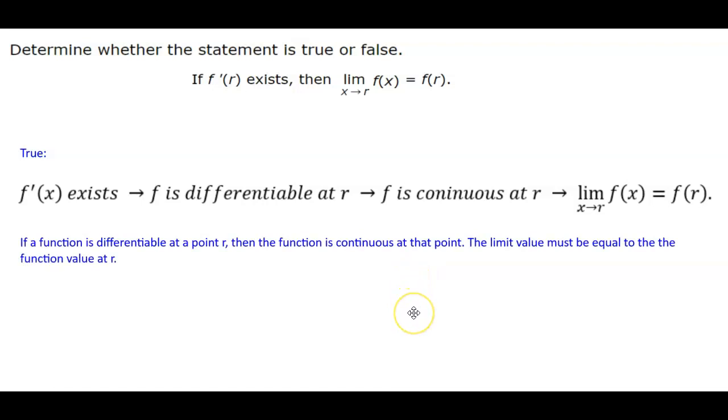So we would say that if a function is differentiable at that point r, then that function is continuous at that point. Therefore, the limit value must be equal to the function value at r.